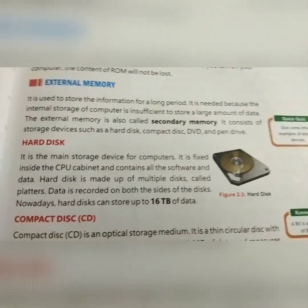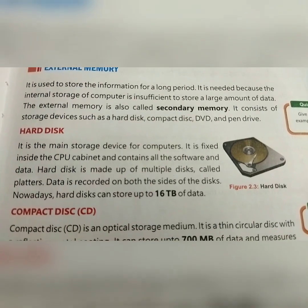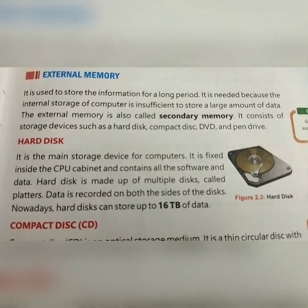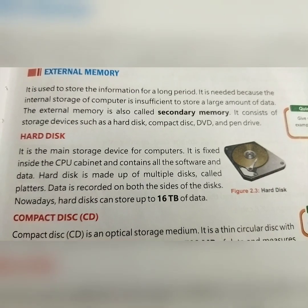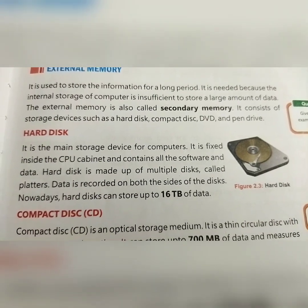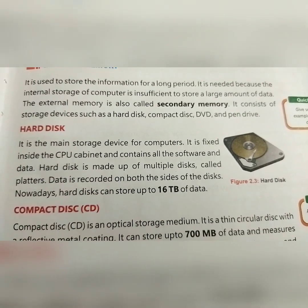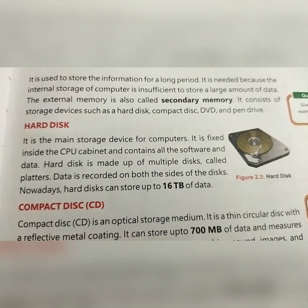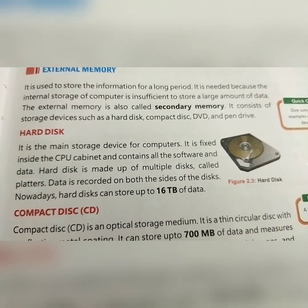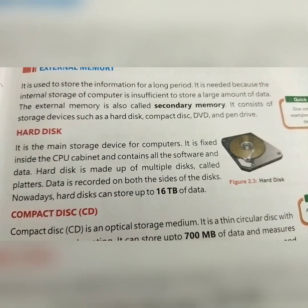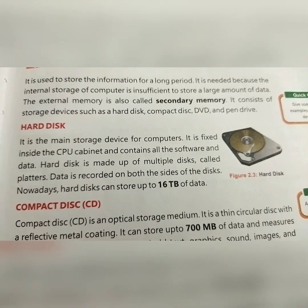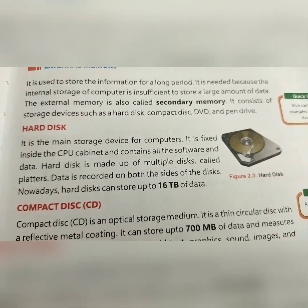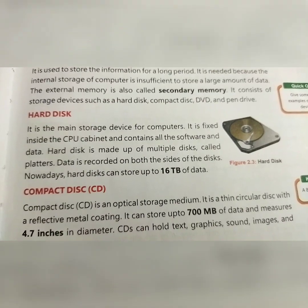The first storage device is the Hard Disk — you can see it here. It is the main storage device for a computer and is fixed inside the CPU cabinet, containing all the software and data. A hard disk is made up of multiple disks called platters, and data is recorded on both sides of the disk. A hard disk can store up to 16 TB of data.